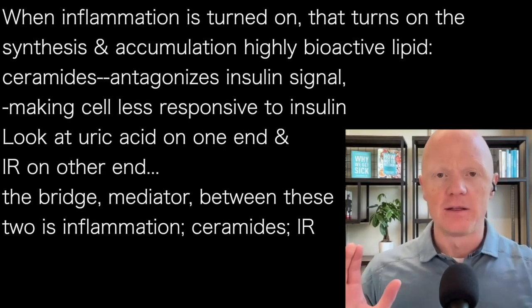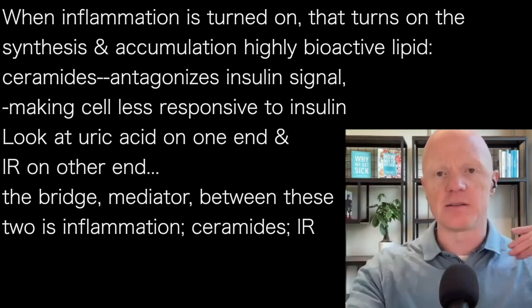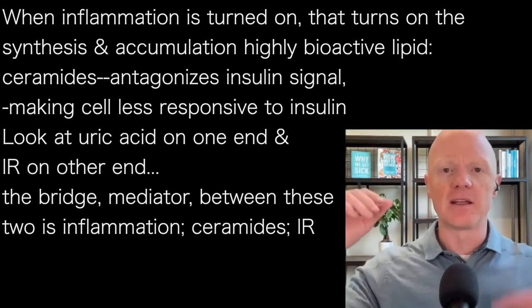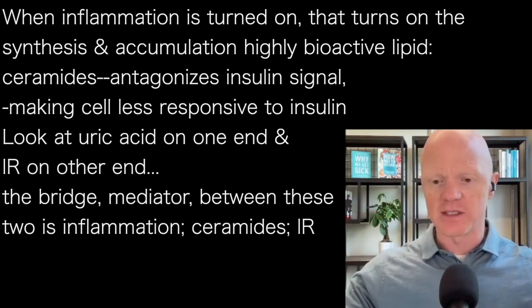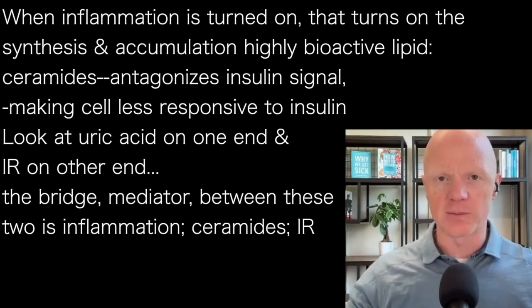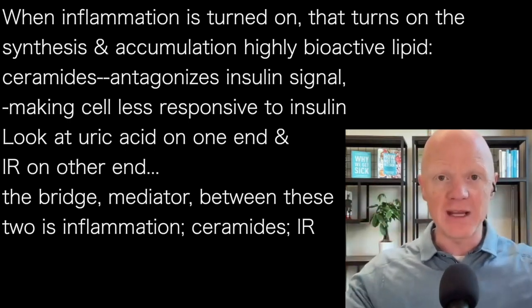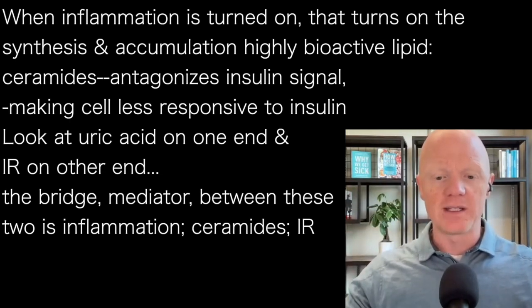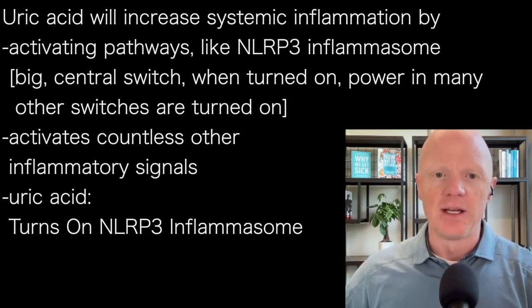Making the cell less responsive to insulin. So if you start imagining a sequence of events — which I like to do and like to teach as a professor — you could imagine looking at uric acid on one end and insulin resistance on the other, insulin resistance being the single most common health disorder worldwide, increasing the risk of virtually every chronic disease. So the bridge, the great mediator, is inflammation, then ceramides, then insulin resistance. And it is worth wondering how important the inflammation is — it is massively important.